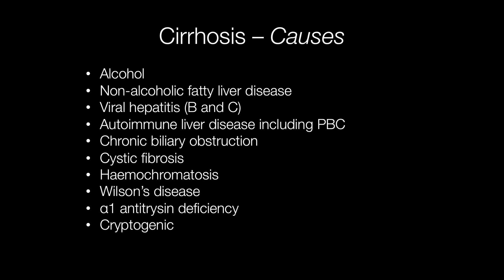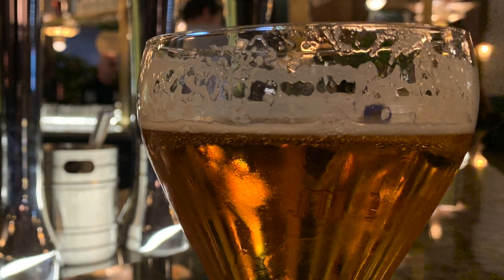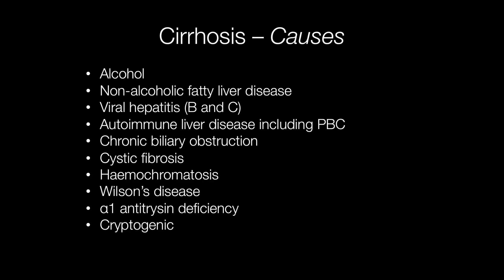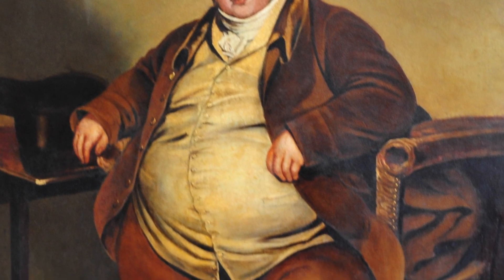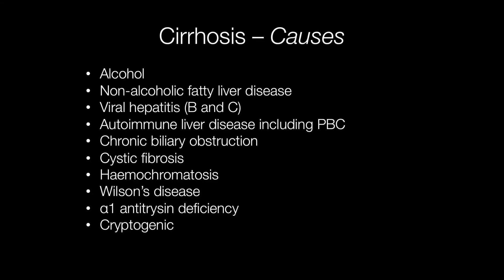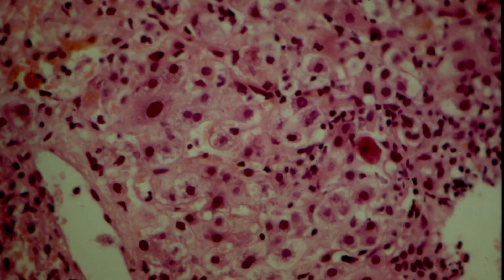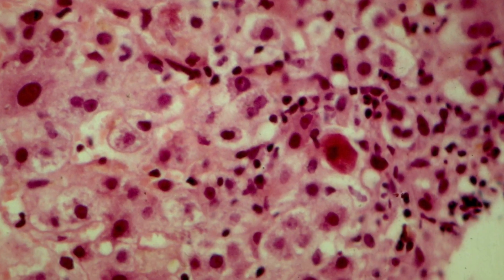There are many different causes of cirrhosis. In the West, the most frequent cause is alcohol abuse, accounting for approximately 60 to 70% of cases. With increasing obesity in populations around the world, non-alcoholic fatty liver disease is an increasingly important cause. Another important cause is viral hepatitis B and C. Here is a liver biopsy from a patient with viral hepatitis showing a councilman body.